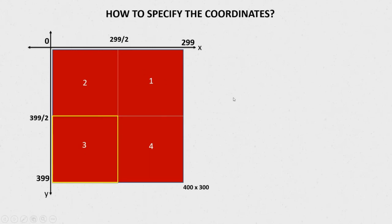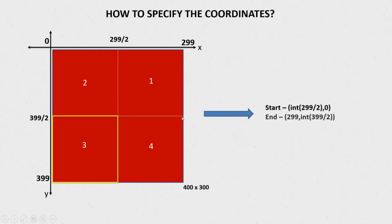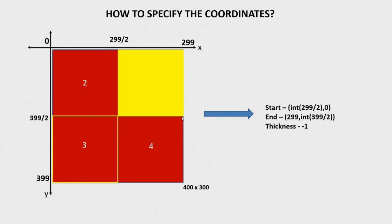To draw a filled rectangle in the first quadrant on the same image, the starting top-leftmost coordinate is (int(299/2), 0) and the rightmost pixel is (299, int(399/2)). To fill the rectangle with a specified color, pass thickness as -1. When you do this, the rectangle will be completely filled with the specified color.